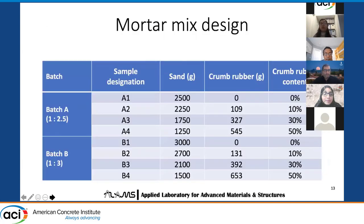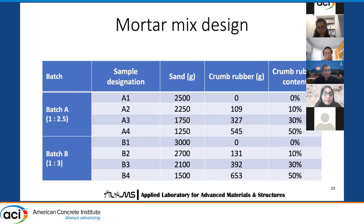The mortar mix design used in our experiments was as follows. We used two batches of mortars, Batch A and Batch B. Batch A had a 1:2.5 cement to sand ratio, and Batch B had a 1:3 cement to sand ratio. Each batch had several replacement percentages of crumb rubber — 10%, 30%, and 50%. Batch A was named A1, A2, A3, A4, and Batch B was named B1, B2, B3, B4.